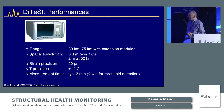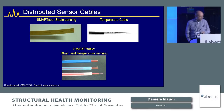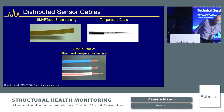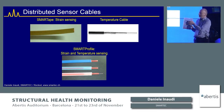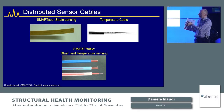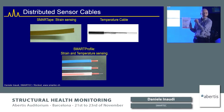Instruments can measure with accuracy on the order of 20 microstrain and one degree Celsius, with readings taking a few minutes for full strain distribution along the fiber. Cable samples shown include strain sensors for surface attachment — a tape-like form used on the Swedish bridge for fatigue crack detection — and cables designed for embedding in concrete or ground, including ones used in the Barcelona tunnel and the sinkhole project.